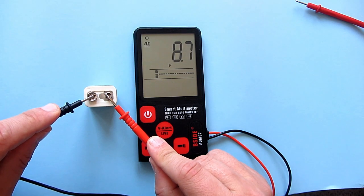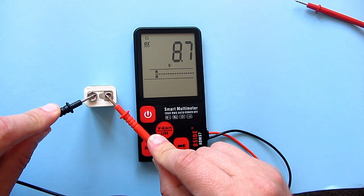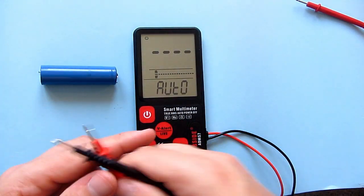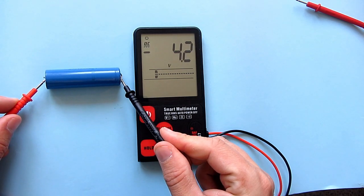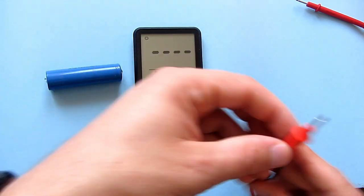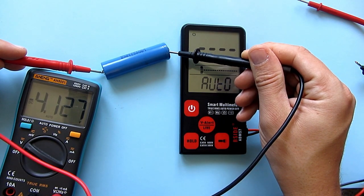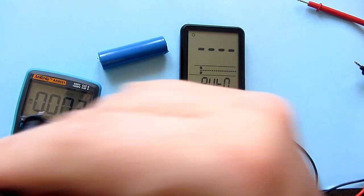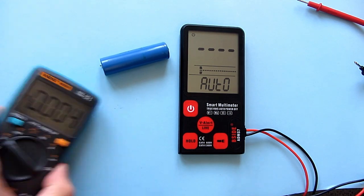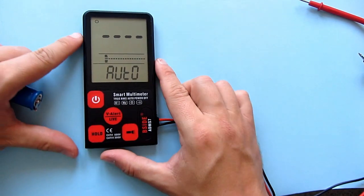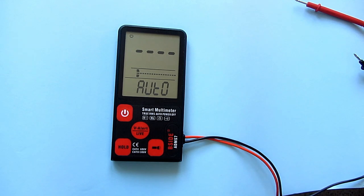And our smart multimeter again, now says 8.7. Let's try another battery. I will try this big battery. Smart multimeter says 4.2 volts, Yang says 4.126. You probably noticed that this smart multimeter can show a number with only one decimal place. So results are always rounded to one decimal place, which is not great if you need more precision.